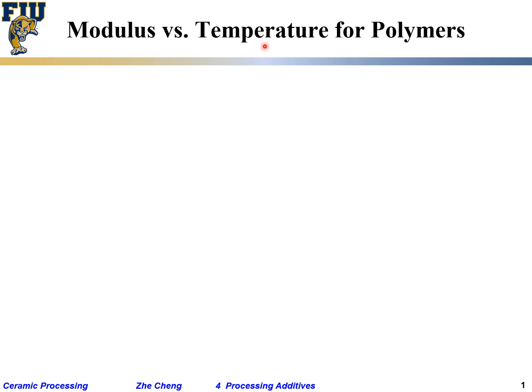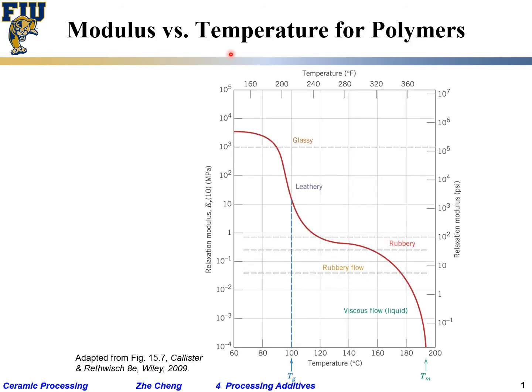Since we talk about the polymer binder, I'm going to show a plot of elastic modulus versus temperature for typical polymers, including the binder material that you are adding in to shape your ceramic paste. Here I'm showing a plot. The horizontal axis is temperature in degrees C. The vertical axis is relaxation modulus — essentially the modulus of the polymer after you let it sit at a given temperature for a while to reach a stable state.